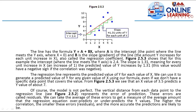Our equation of the line has a slope of 1.31. In regression, as x increases, y increases correspondingly. If x is equal to 0, y is equal to 2.4. If x is equal to 1, y increases by 1.31. So 2.4 plus 1.31 equals 3.7.